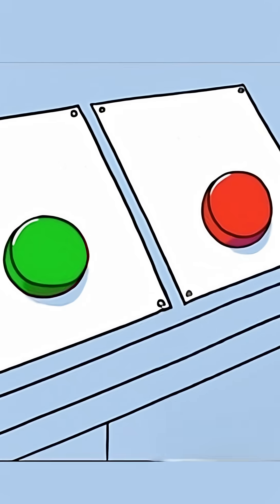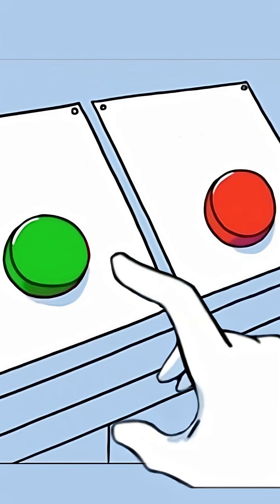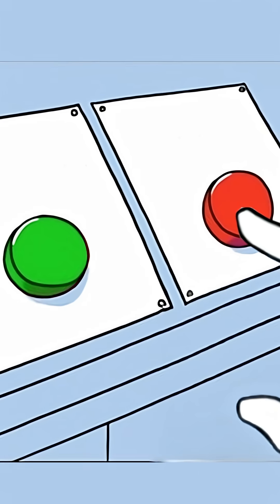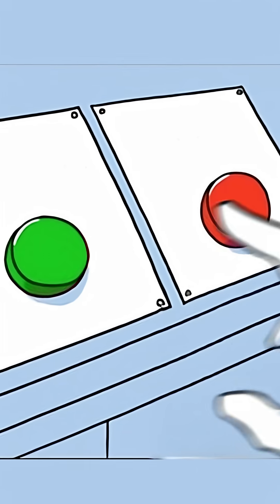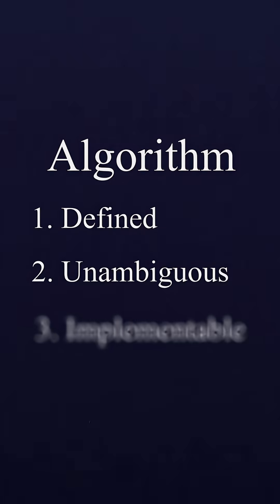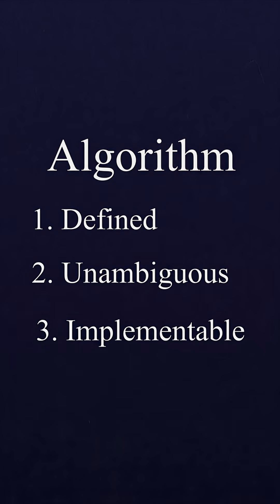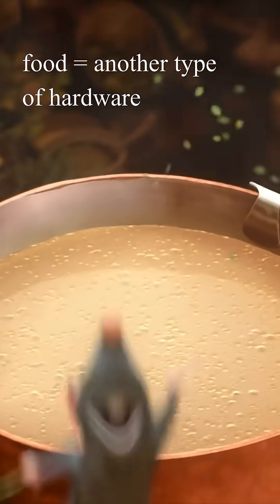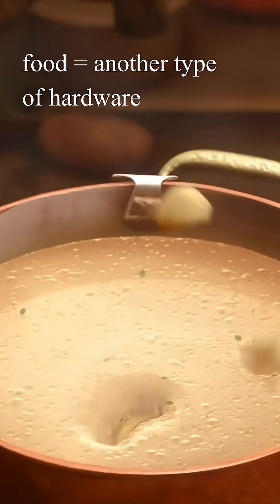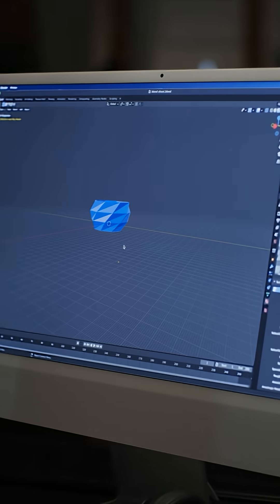An implementation of the algorithm cannot be up to interpretation. The implementation is either correct or incorrect, with no in-between. Three, it must be implementable — we need to be able to carry out the algorithm either with hardware or, more commonly, with software.